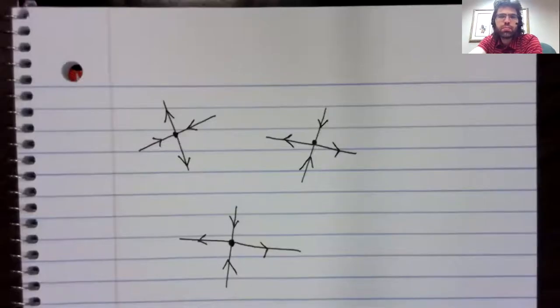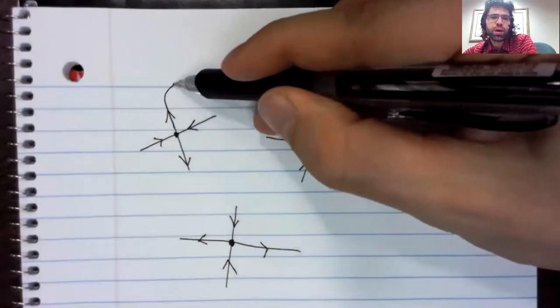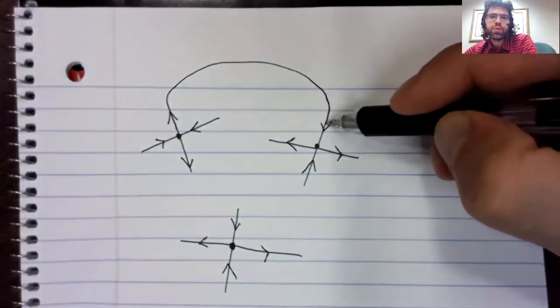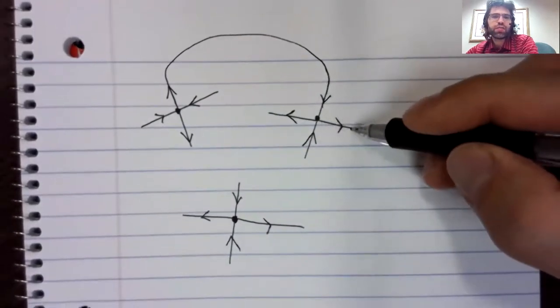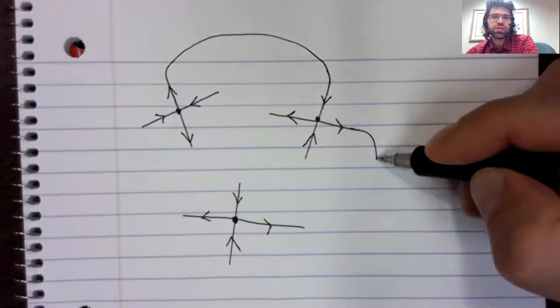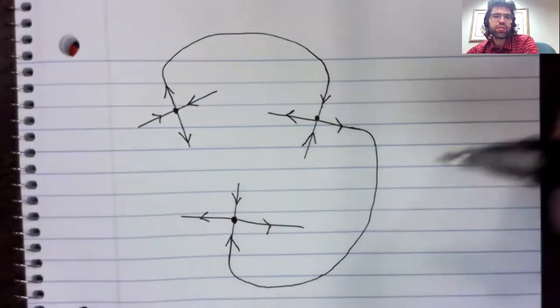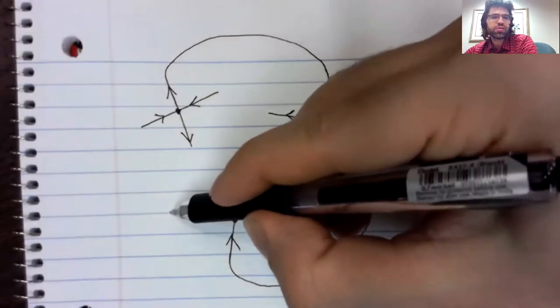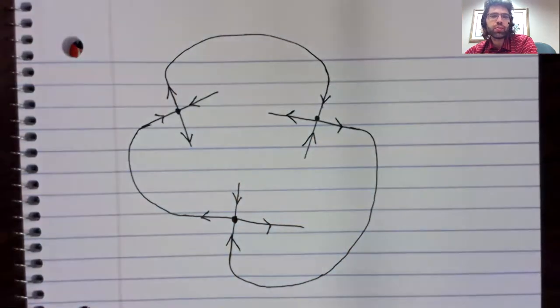We have some collection of saddles, say three of them. And the unstable manifold of one is the stable manifold of another. And then the unstable manifold of this intersects with the stable manifold of that, and the unstable manifold of that.